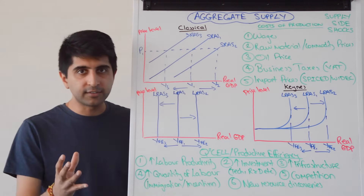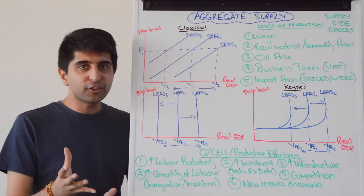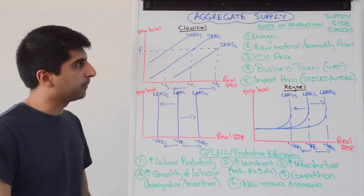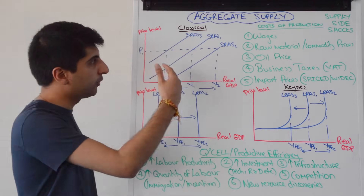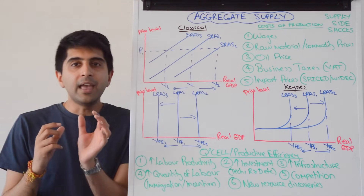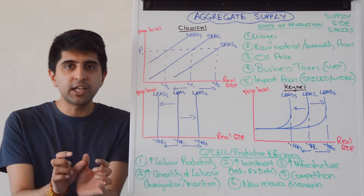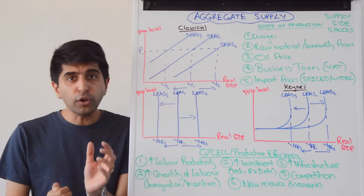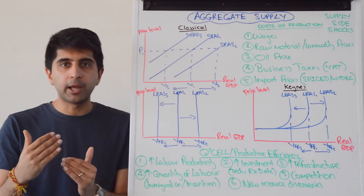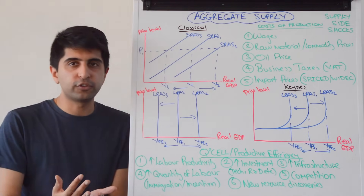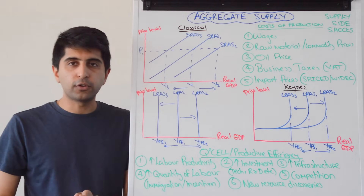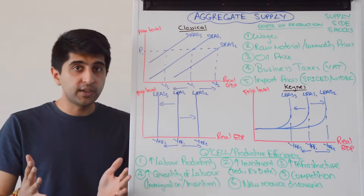Let's get straight into the classical interpretation. In the classical model you can have short run aggregate supply and long run aggregate supply. Short run aggregate supply is upward sloping. The position of short run aggregate supply is determined by costs of production in the economy. If costs of production change, the SRAS will shift. If there is an increase in cost of production, SRAS will shift to the left. If there is a decrease, SRAS will shift to the right.